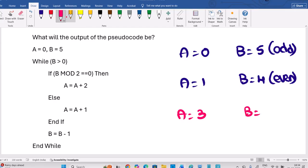B is equal to 3 now, because B is decreased by 1, B is equal to 3. B is odd number. Then again next, B is 3, odd number. So A should be increased by 1 only. A will become 4. B equal to 2, even number.